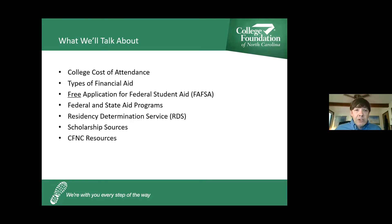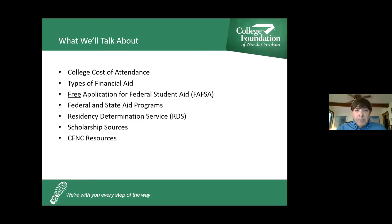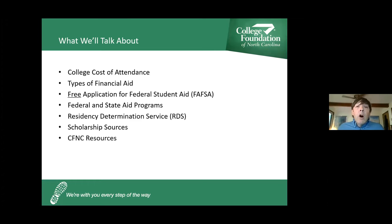Financial aid includes grants and scholarships — free dollars to help you pay for college — but it also includes student loans and possible employment. I want students to maximize grant and scholarship attainment and minimize student loan indebtedness. The FAFSA is how we get this process started. This process should always be free — you don't want to pay anybody to help you complete the FAFSA. I'll also be talking about federal, state, and institutional scholarship and aid programs, the Residency Determination Service, scholarship resources, and tools on CFNC.org.